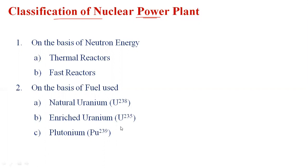The first classification is based on neutron energy. Here there are two types of reactors: one is the thermal reactor and another one is the fast reactor. In the thermal reactor, a moderator is used, but in the fast reactor, a moderator is not used. In the nuclear power plant, once the fission process takes place with uranium, thorium, or plutonium, the moderator absorbs some amount of radioactive substances. Maximum nuclear power plants prefer thermal reactors.